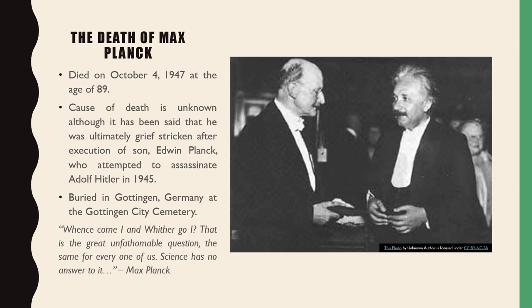The death of Max Planck. He died on October 4th, 1947, at the age of 89. His cause of death is unknown, although it has been rumored that he was ultimately grief-stricken after the execution of his son Edwin, who attempted to assassinate Adolf Hitler in 1945. Max Planck was buried in Göttingen, Germany, at the Göttingen City Cemetery.